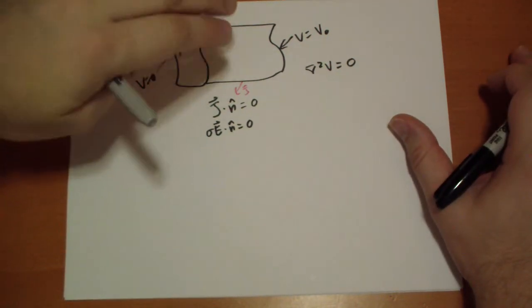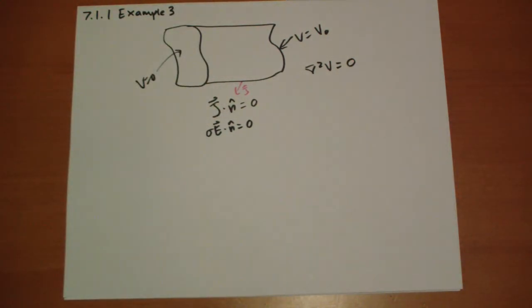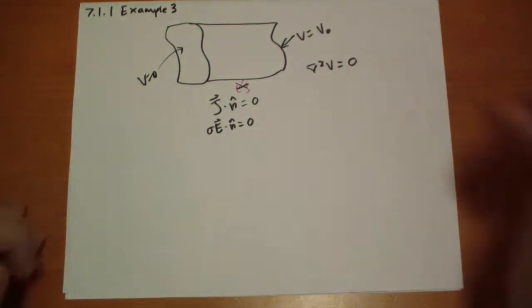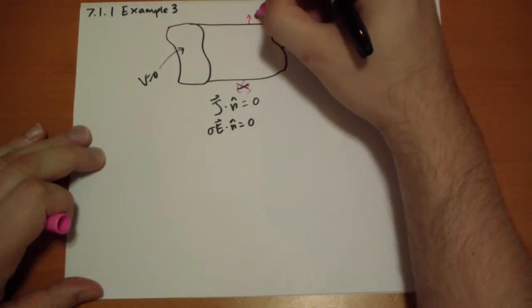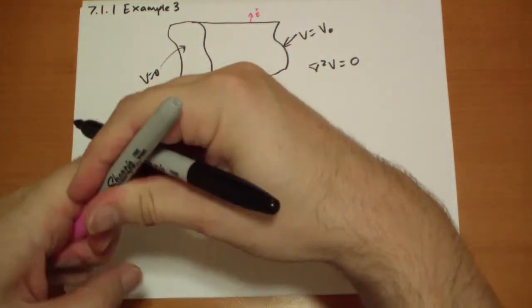So the electric field does not point out, so we don't get a j pointing out, and we're not going to get an electric field pointing out. Not going to happen here.